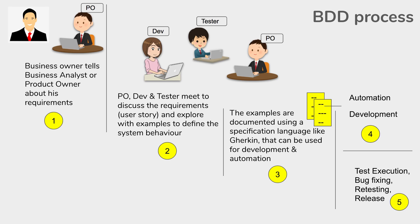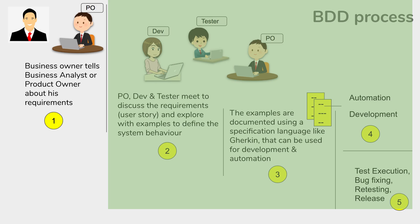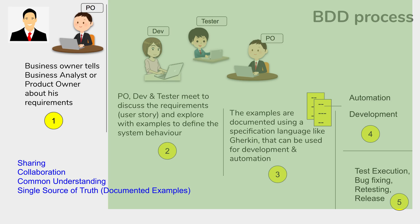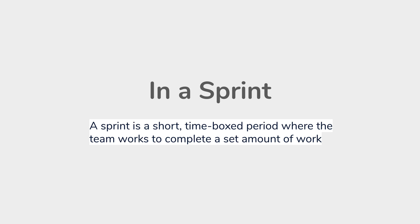Finally, we have the test execution phase. If there are any bugs or defects reported, they are fixed, retesting and regression is done, and finally release is done. The main advantage here is that right after the product owner gets the requirements from the stakeholders, there is complete collaboration and communication with all team members. They have a common understanding and documented examples — a single source of truth used by all teams, both business and technical.